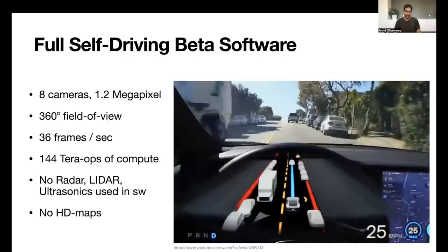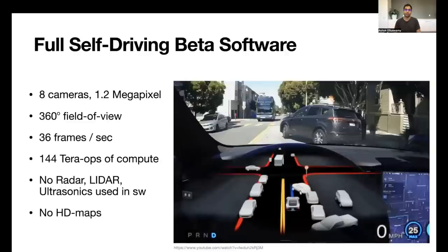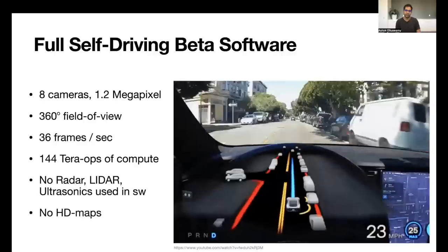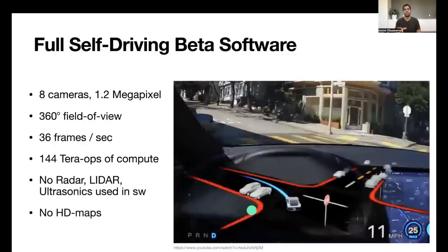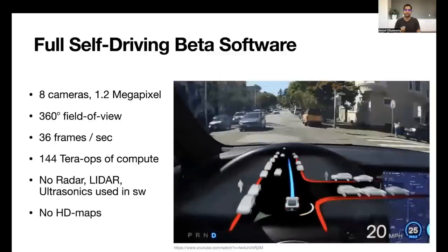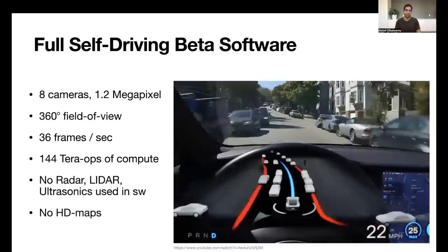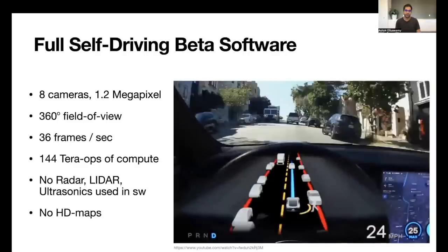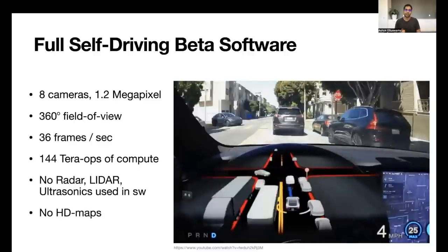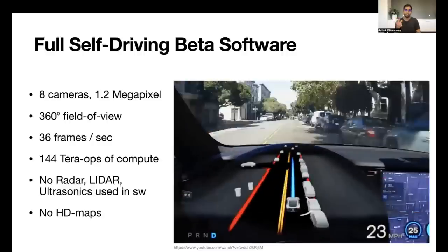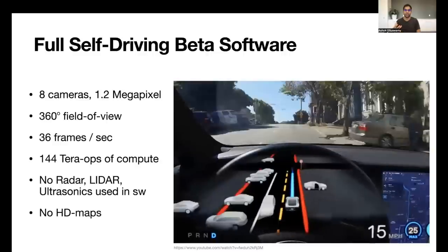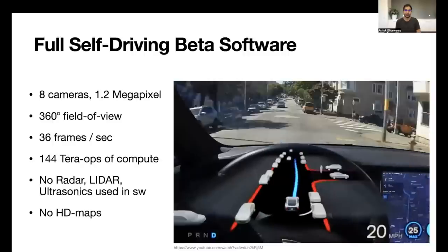We have inbuilt 144 tera-op compute platform on every car that runs these neural networks. Again, everything that you are seeing here is based on pure online perception. There are no usage of radar, lidar, ultrasonics or other sensors in the making of this. In fact, we don't even use HD maps, which are typically used in other autonomous driving solutions. All of this is based on the live camera video stream that produces this output and the planning stack is able to navigate such complex scenes with just this raw live input.